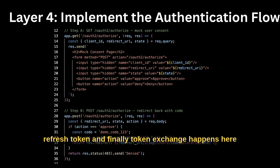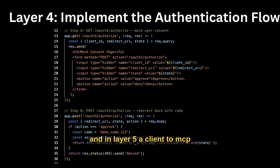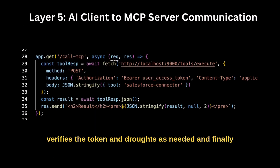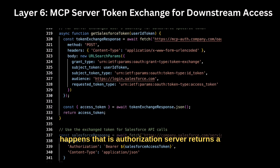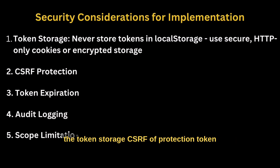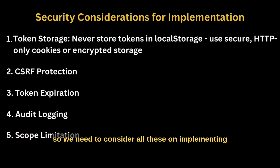Finally, token exchange happens. In layer 5, AI client to MCP server — the MCP server verifies the token and routes as needed. In layer 6, token exchange and downstream calls happen, and the authorization server returns a Salesforce-specific token scoped for user permissions. Some of the security concerns in implementation are token storage, CSRF protection, token expiration, audit logging, and scope limitation — we need to consider all of these when implementing authorization at the AI client server.